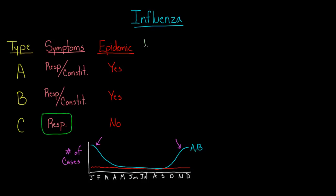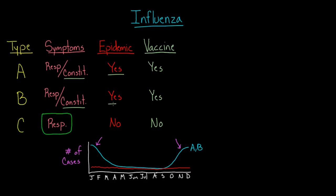What about the vaccine? Type A is in the vaccine, and so is type B, but type C is not. This makes sense because with the vaccine you're really worried about people who are going to get very sick — those with fevers and malaise who are more likely to progress to severe disease. You want to prevent the epidemics caused by type A and B, so it makes sense that those are in the vaccine whereas type C is not.